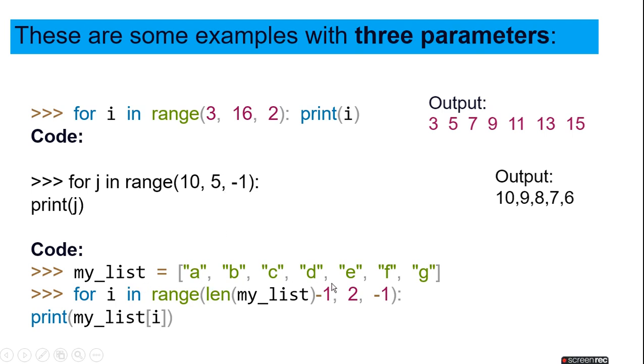My_list equals a, b, c, d, e, f, g. For i in range len of my_list minus 1. There it is 7, so it will reduce and become 6. 6 to 2 minus 1. So it will print the my_list i position. It will print g, f, e, d, because the second position is c.